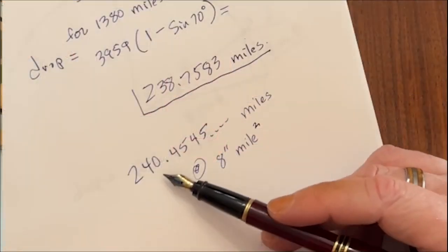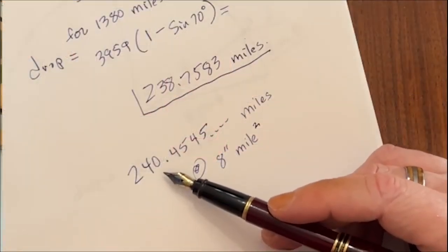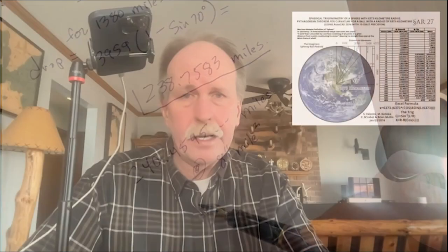Well, how does that compare to 8 inches per mile squared over 1,380 miles? Well, that would be 8 inches times 1,380 squared would be the amount of the drop in inches. We divide that by 12, and then divide it again by 5,280 to get the drop in miles. And at 8 inches per mile squared, it comes out to 240 miles, an error of only 2 miles. I don't know about you, but I find that pretty impressive.